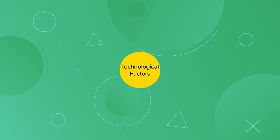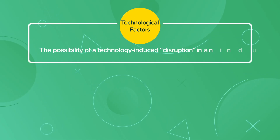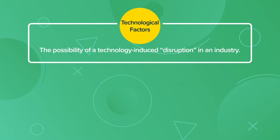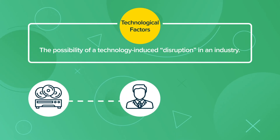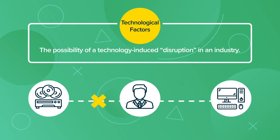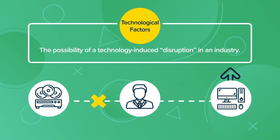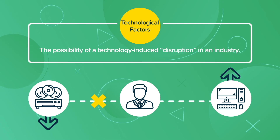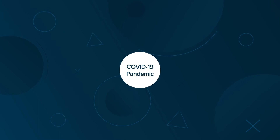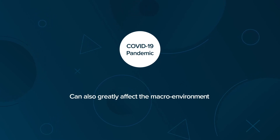Technological factors. An example is the possibility of a technology-induced disruption in an industry. New technologies can create new markets while making previous markets outdated, such as the rise of streaming services discontinuing purchases and rentals of physical DVDs. Other external factors such as the COVID-19 pandemic can also greatly affect the macro-environment.